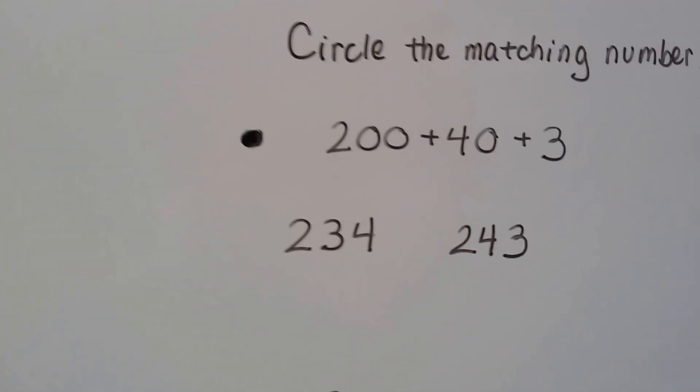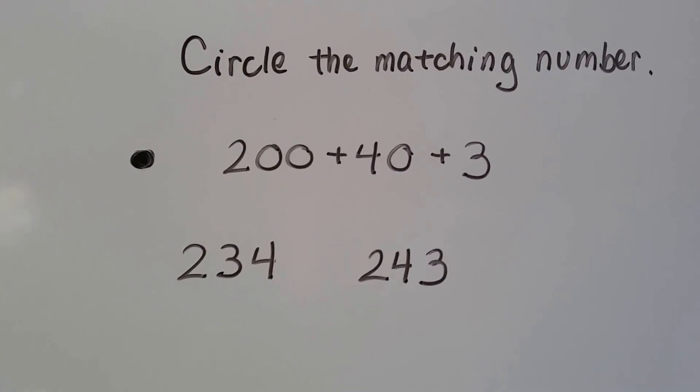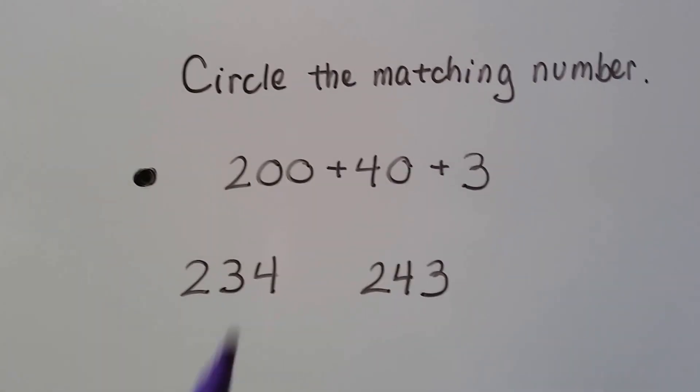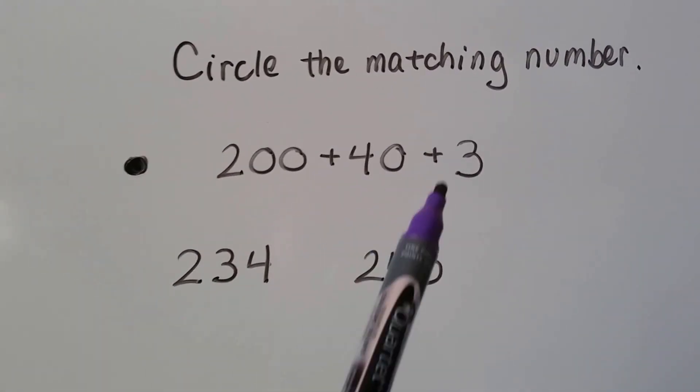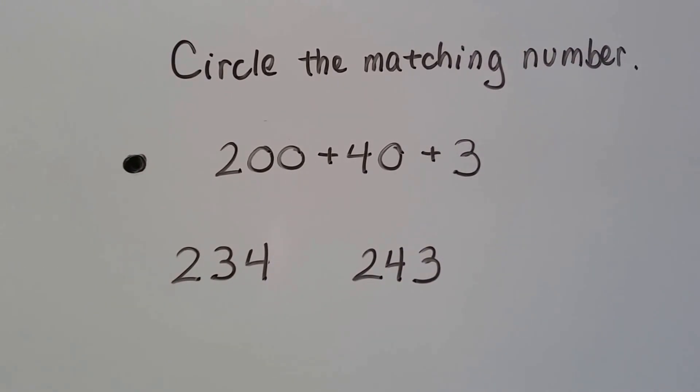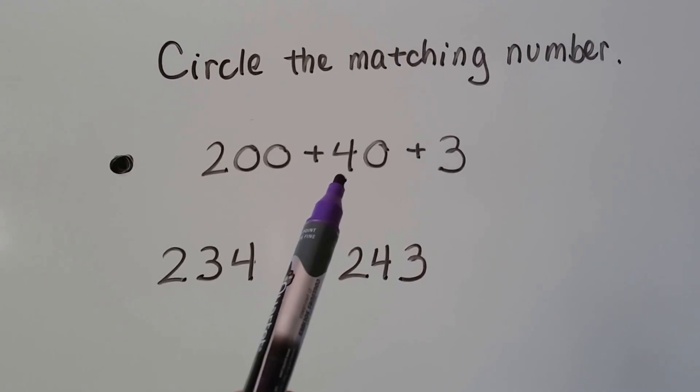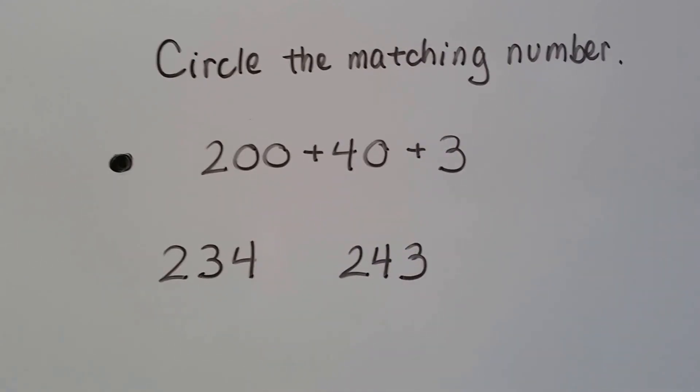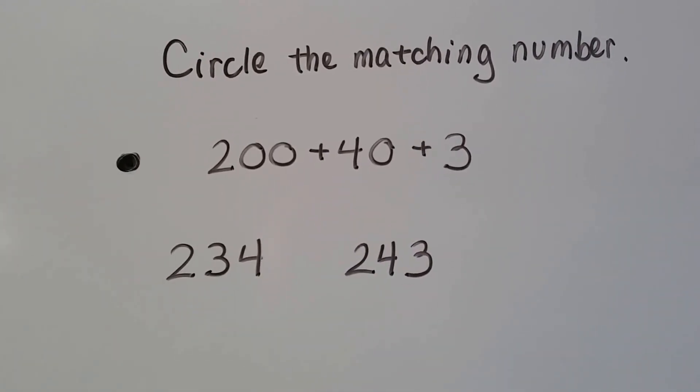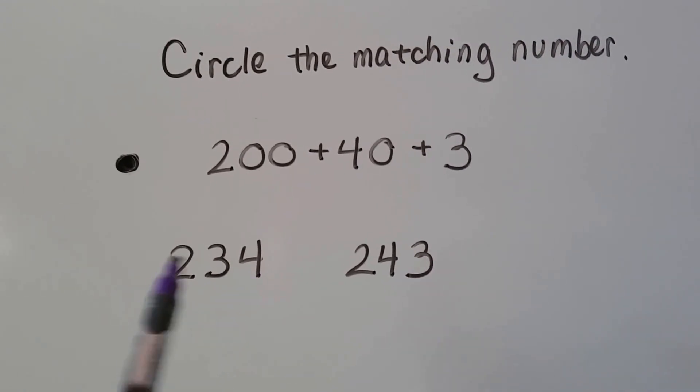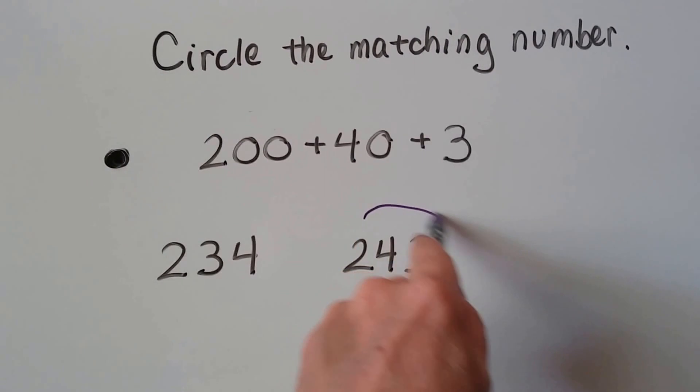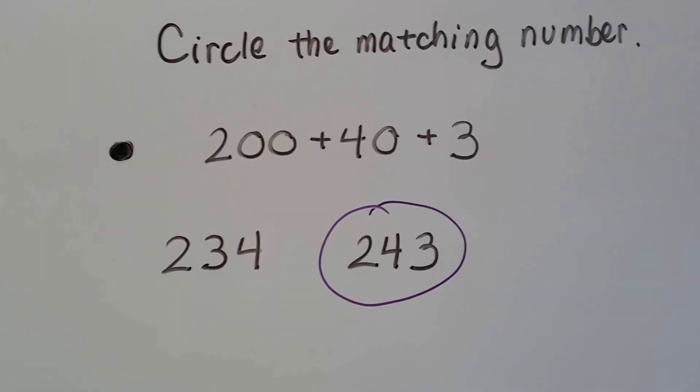All right, let's see if we can circle the matching number. We have 200 plus 40 plus 3. We need a 2 in the hundreds place, a 4 in the tens place, and a 3 in the ones place. Well, that's got a 3 in the tens place and a 4 in the ones place, so it's not this one. So we can see this one matches, and that's the right one.